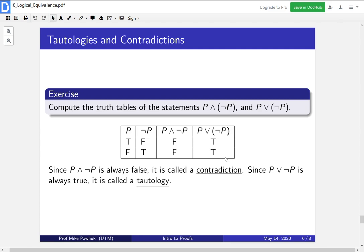So we give those special names. Since P and not P is always false, we call it a contradiction. And the OR statement is always true, so we call it a tautology. We'll use these throughout the course.